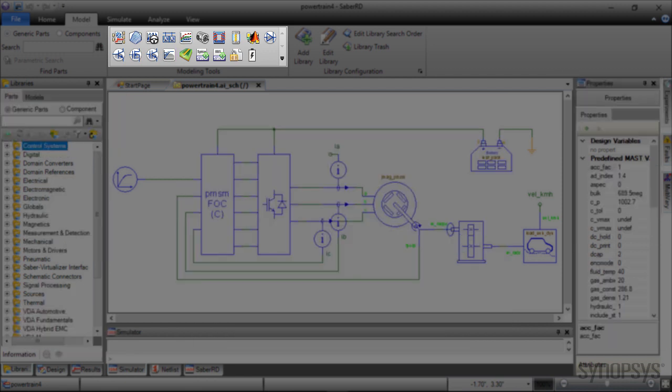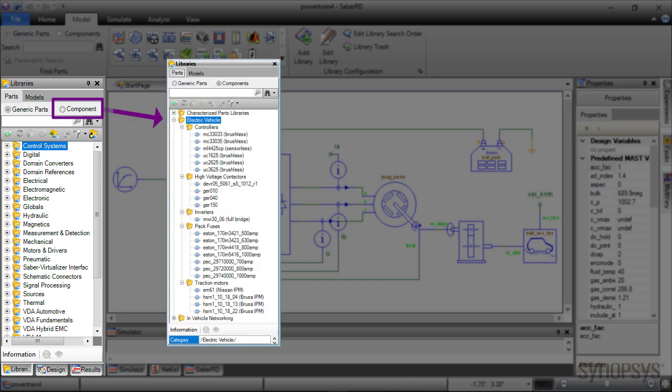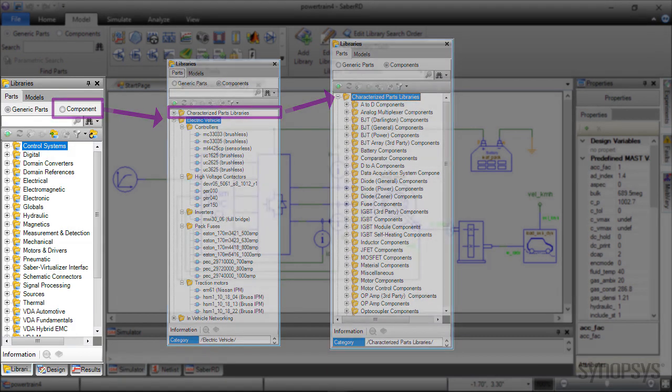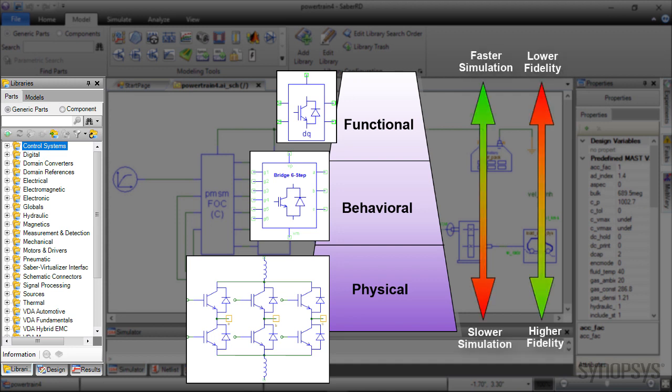Apart from these modeling tools, Sabre RD has a dedicated library for electric vehicle components and more than 30,000 ready-to-use characterized components. Models with different abstraction levels, based on your design goals, expected simulation speed, and accuracy are available in Sabre RD.